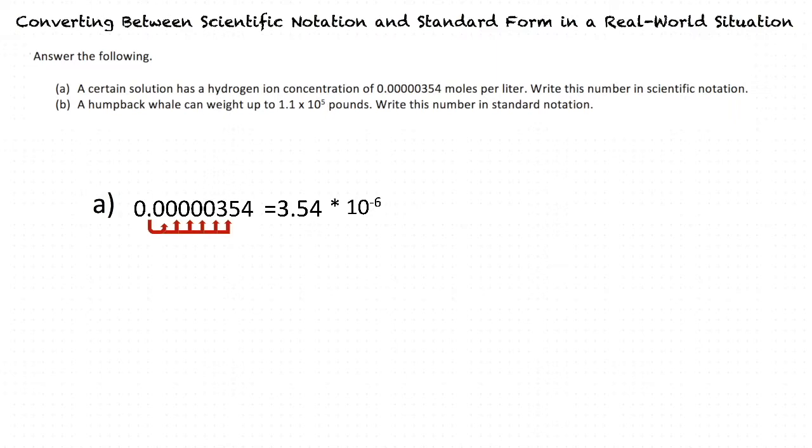For the second part of the question, we need to write 1.1 times 10 to the power of 5 in standard notation. We can see that this number is written in scientific notation. How do we know that it's written in scientific notation? It has a number between 1 and 10 multiplied by a power of 10.